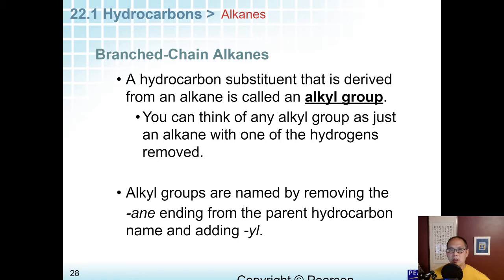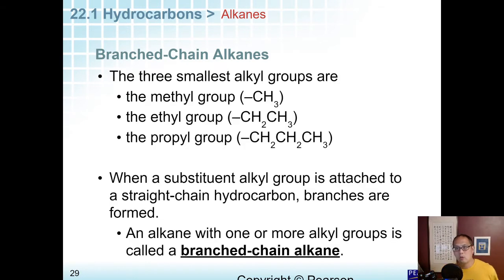A hydrocarbon substituent that is derived from an alkane, basically an alkane attached to a longer alkane, like a short one attached to a long one, is called an alkyl group. You can just think of an alkyl group as an alkane with one of the hydrogens removed because it's just attaching to another thing. Alkyl groups are named by removing the A-N-E ending from the parent hydrocarbon and adding Y-L. We're only going to worry about three alkyl groups here.